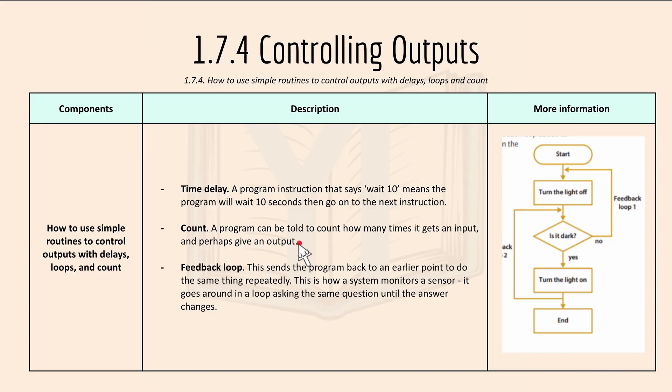And count is a program that can be told to count how many times it gets an input, and perhaps give an output. A feedback loop is when this sends the program back to an earlier point to do the same thing repeatedly.